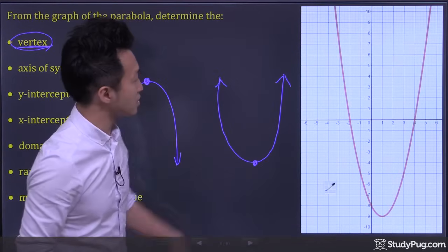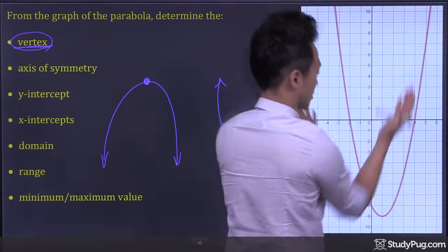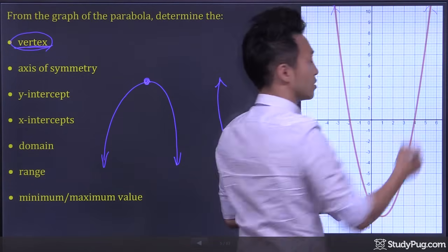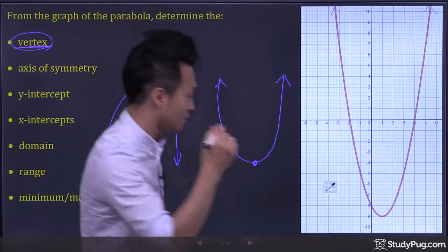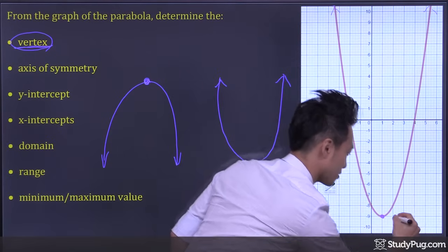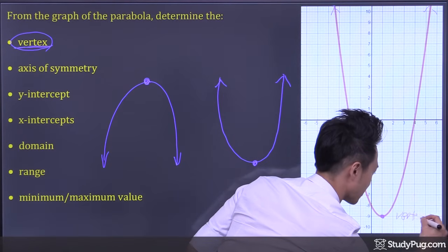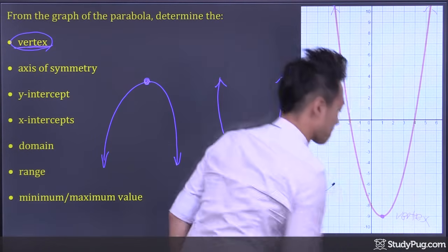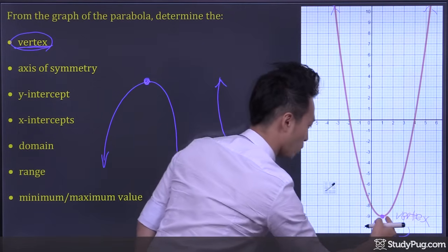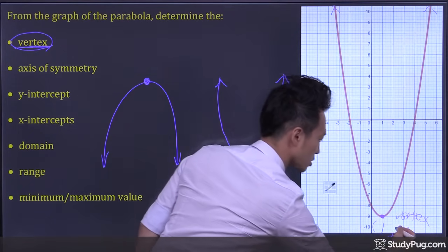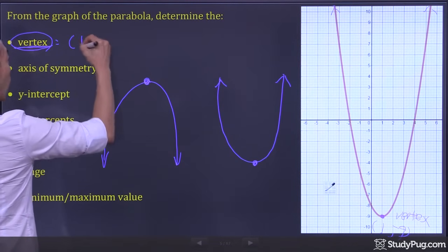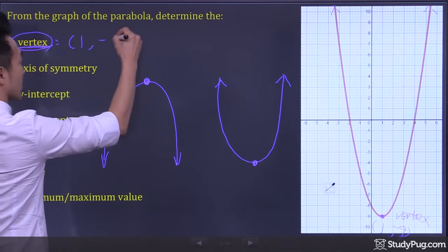So in this case, we have a parabola opening up. So the vertex is the lowest point, right here, sitting at x equals 1, y equals negative 9. So the vertex is at (1, negative 9).